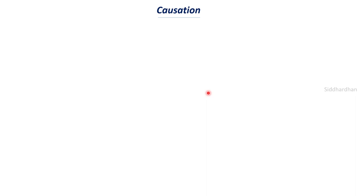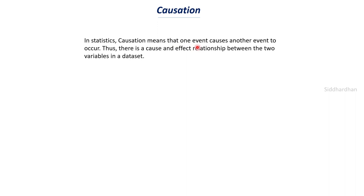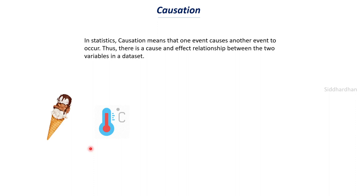This leads us to causation. In statistics, causation means one event causes another event to occur — there is a cause and effect relationship. Contrary to correlation, in causation we prove that two events are a cause-and-effect pair. Let's compare number of ice cream sales and average temperature over several days. Plotting temperature on the x-axis and ice cream sales on the y-axis with 10 data points shows a direct proportionality.